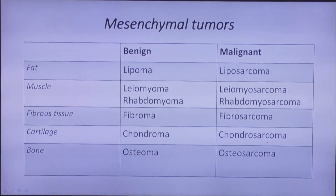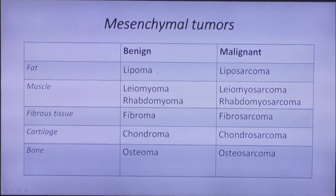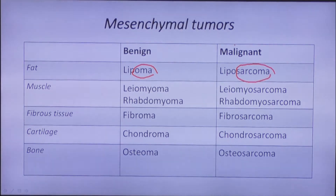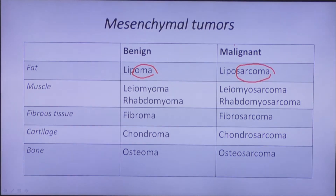Here is the basic classification for mesenchymal tumors. The suffix '-oma' is used for benign tumors; for malignant tumors, you use '-sarcoma.' The first part of the name tells us about the tissue of origin. By the way, 80 percent of all mesenchymal tumors is lipoma.